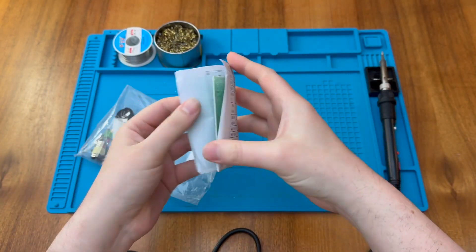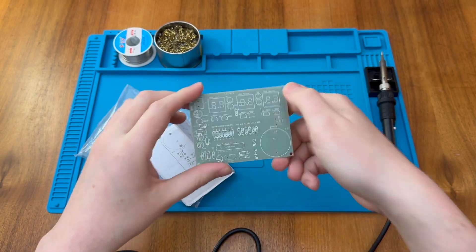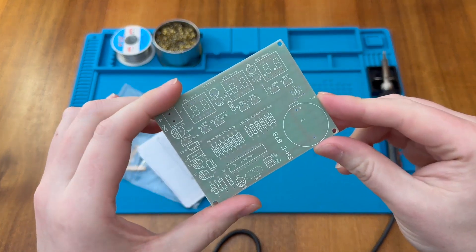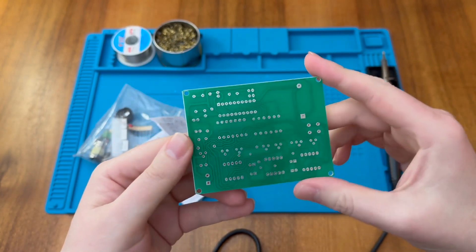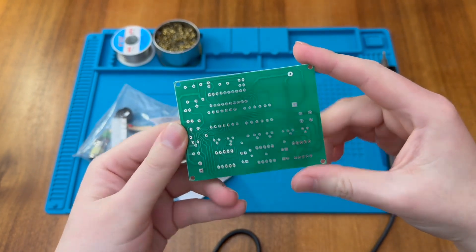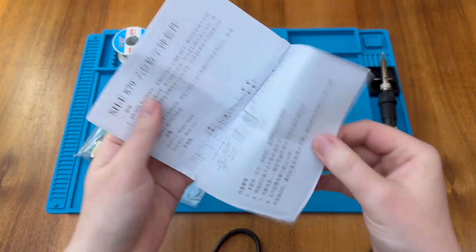Okay, so inside the bag we have our PCB, single-sided PCB but with a nice silk screen to show us where to put all of the components. And there's the backside as well. And that was wrapped up in this instruction leaflet.